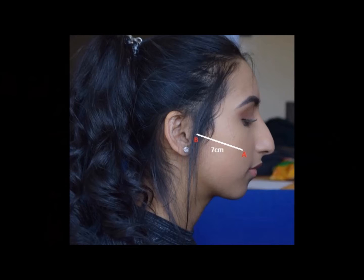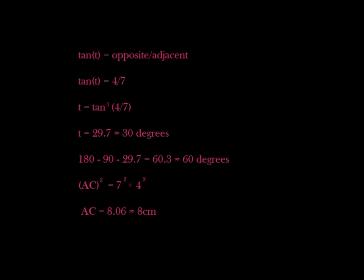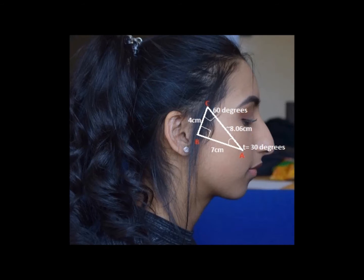We will now use simple trigonometry to find the perfect contour and highlight lines. We measure AB as seven centimeters and BC as four centimeters. Using simple trigonometry, we get tan(t) is equal to 4 over 7, so t is approximately 30 degrees. The angles in a triangle all add up to 180 degrees, so the angle ACB is approximately 60 degrees.